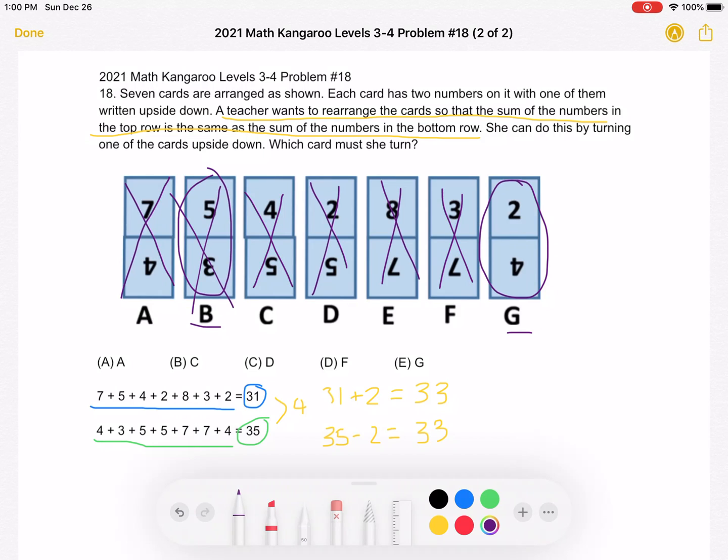So our correct answer is G, because if we flip it and the 4 goes to the top, the 2 goes to the bottom, the top row will have a sum that is 2 greater than what it currently is and the bottom row will have a sum that is 2 less than it currently is, and we would have a total of 33 on top and bottom.